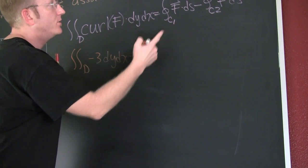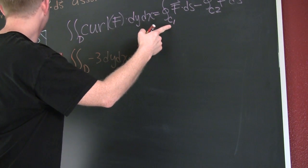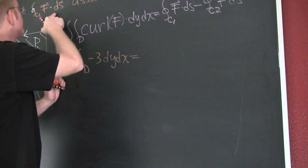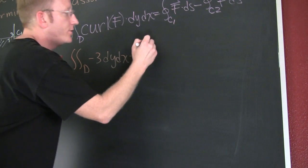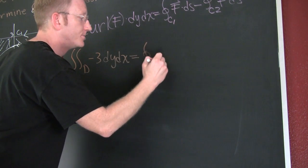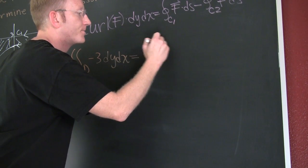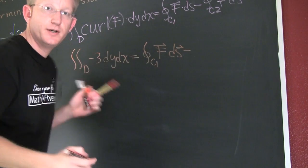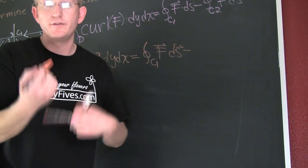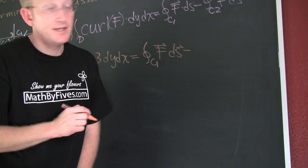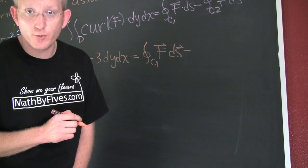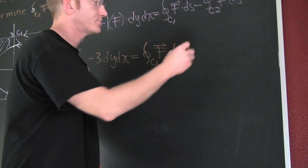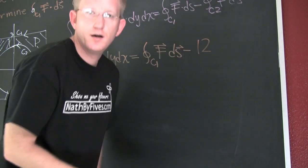That's going to be equal to, what are we looking for? We're looking for the integral over the closed path C1. So we don't know that part yet. But what we do know is the integral over the closed path C2. They gave it to us and they told us that it was 12.